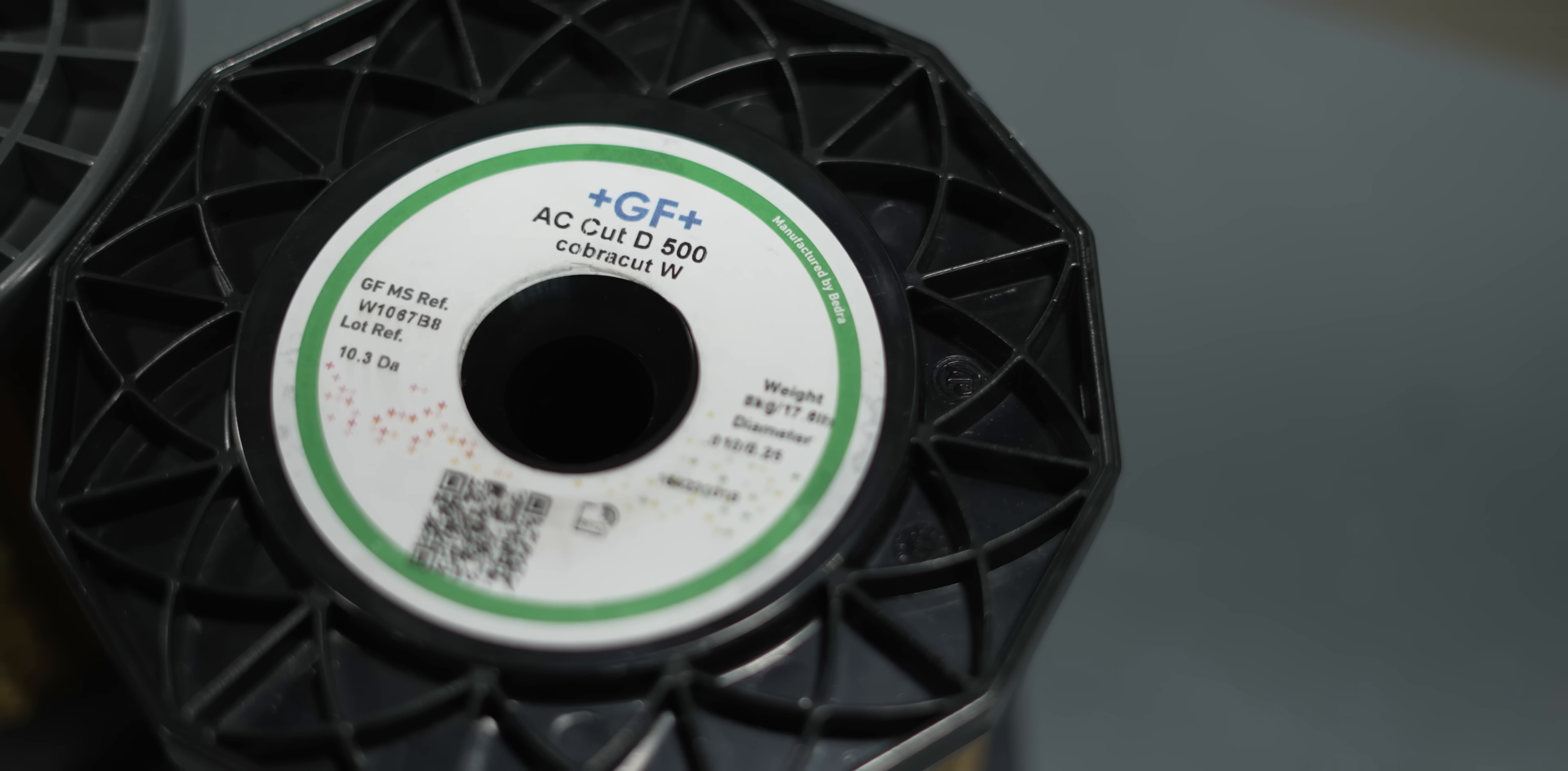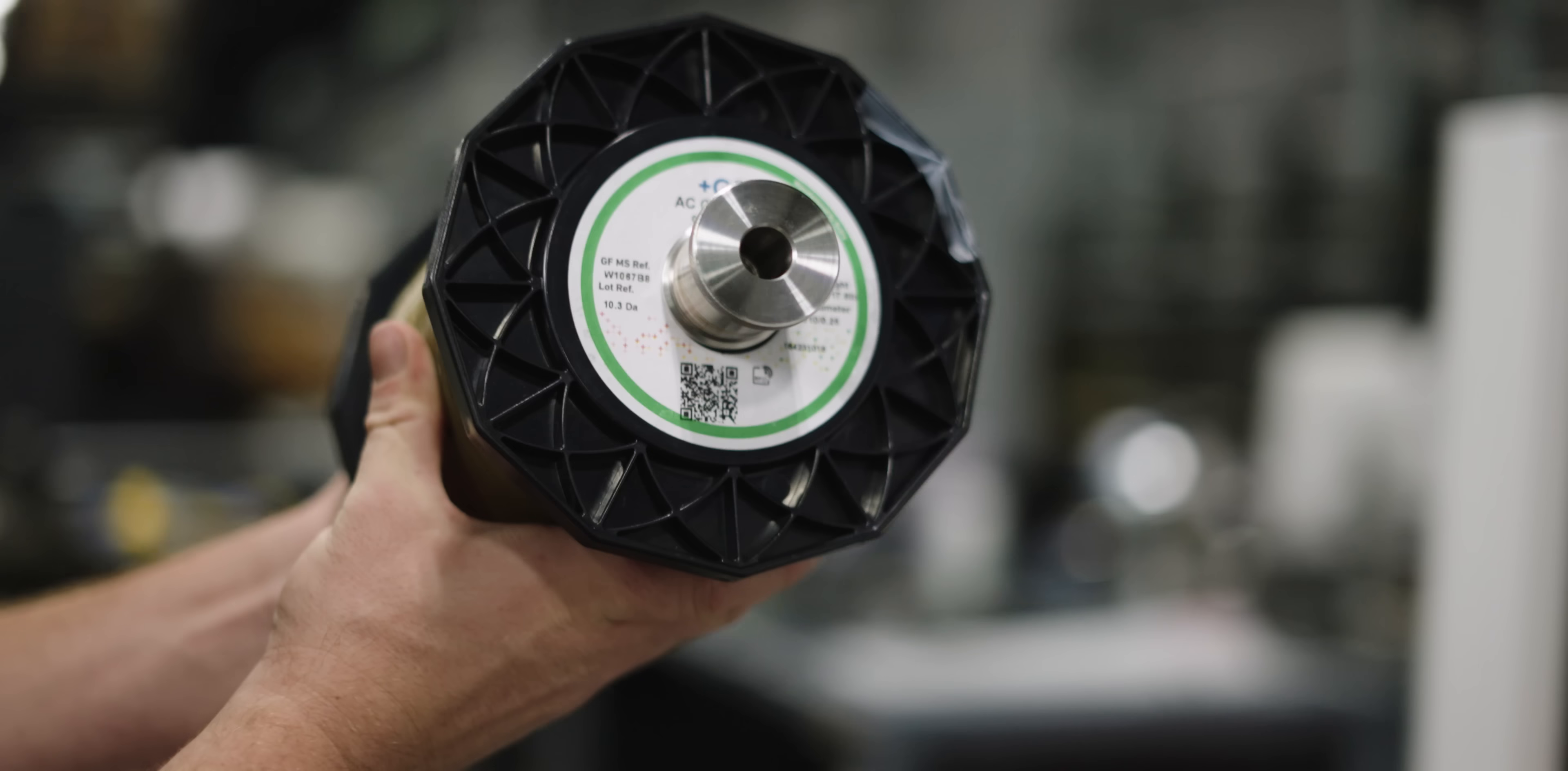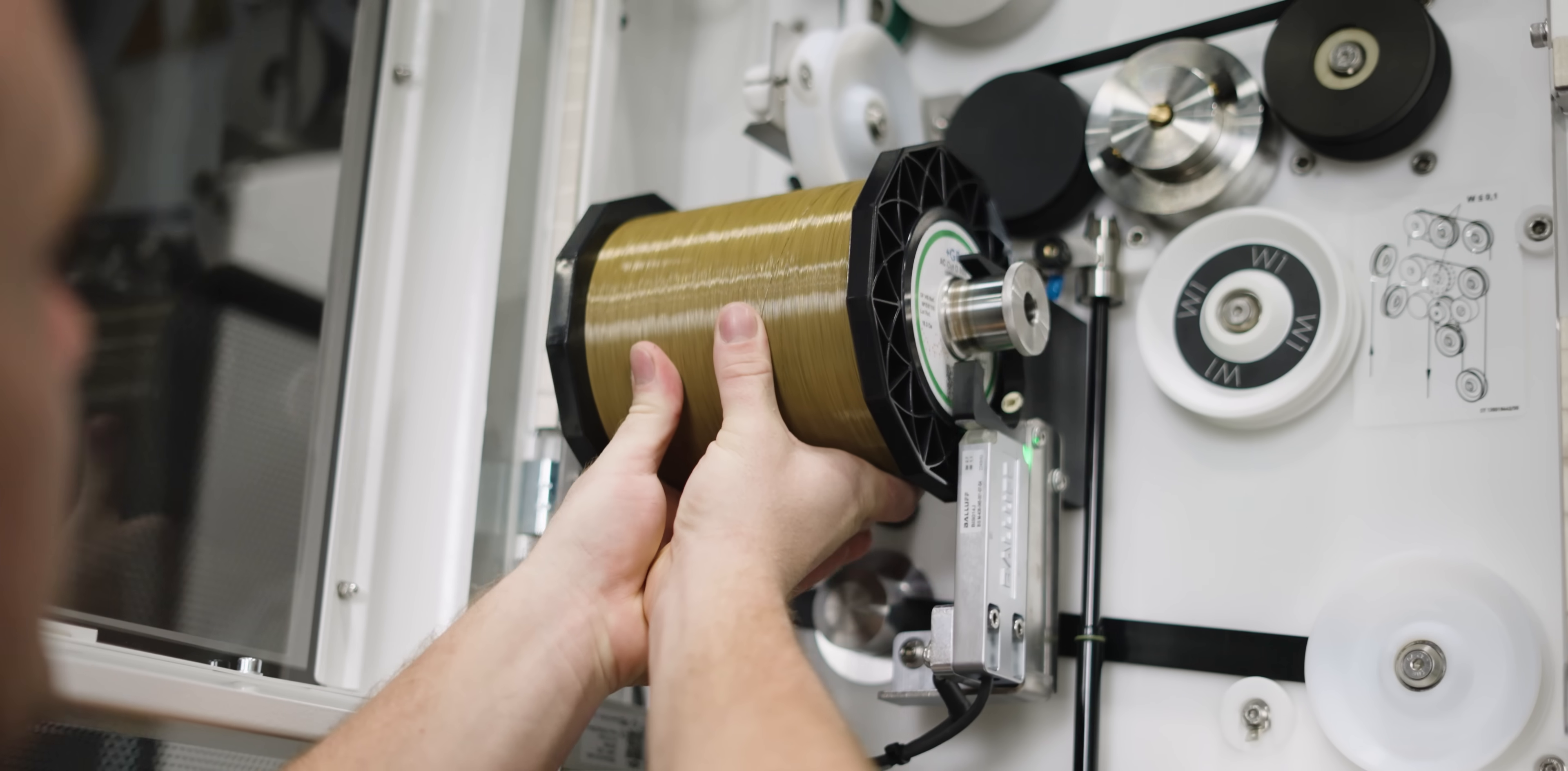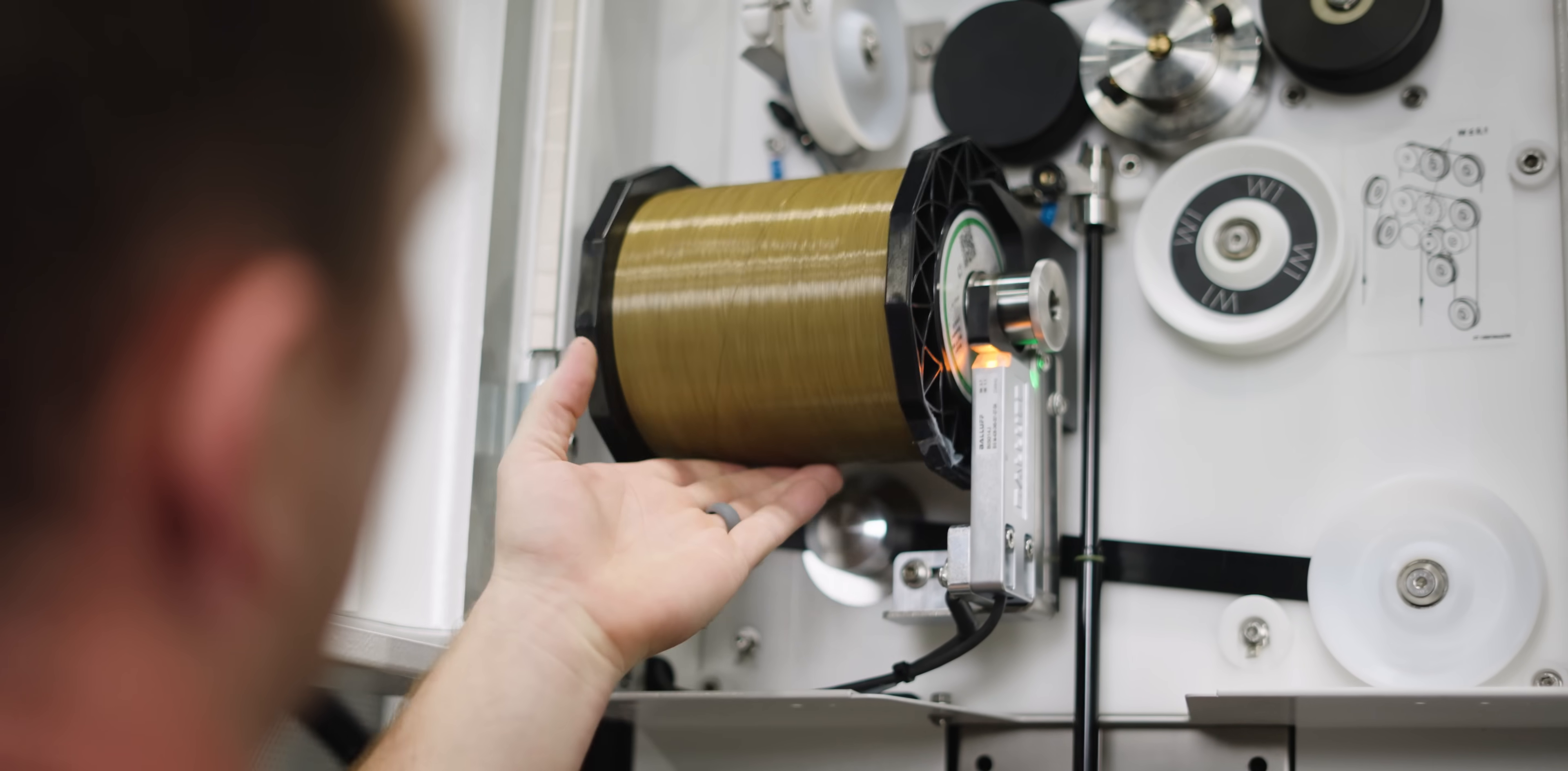For this project we're going to use 10,000th diameter AC cut D 500 wire. Now this is brass wire but it's got a little bit higher copper content than your standard hard brass wire. It's also a little bit softer which is going to allow us to cut tapers much easier.